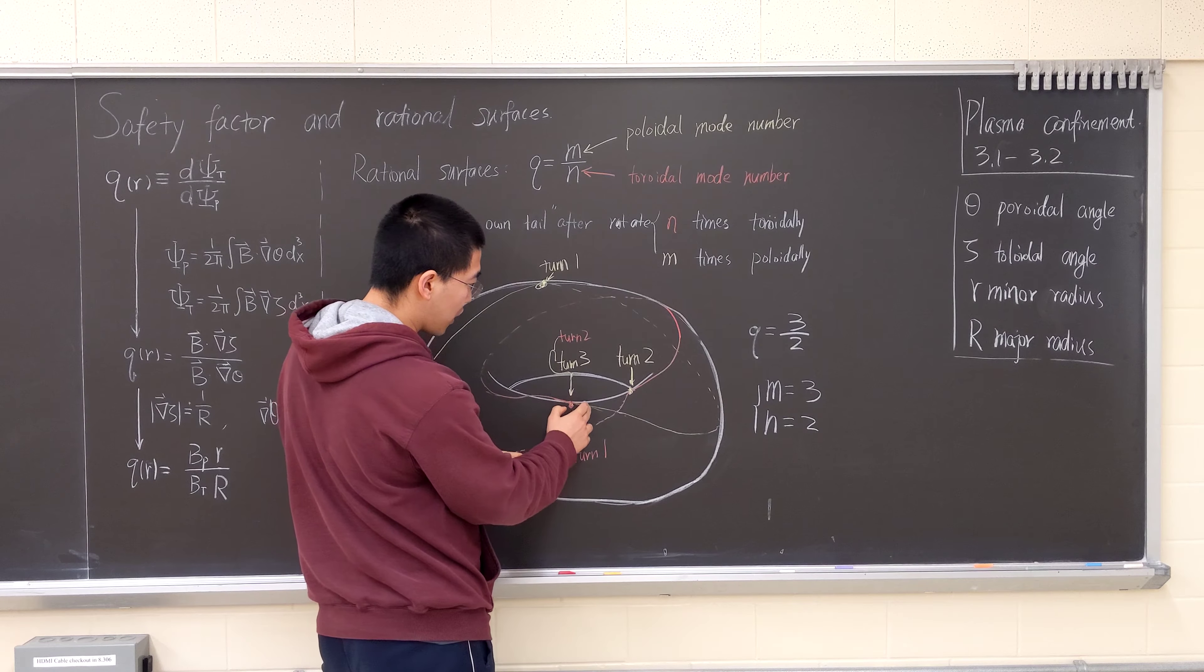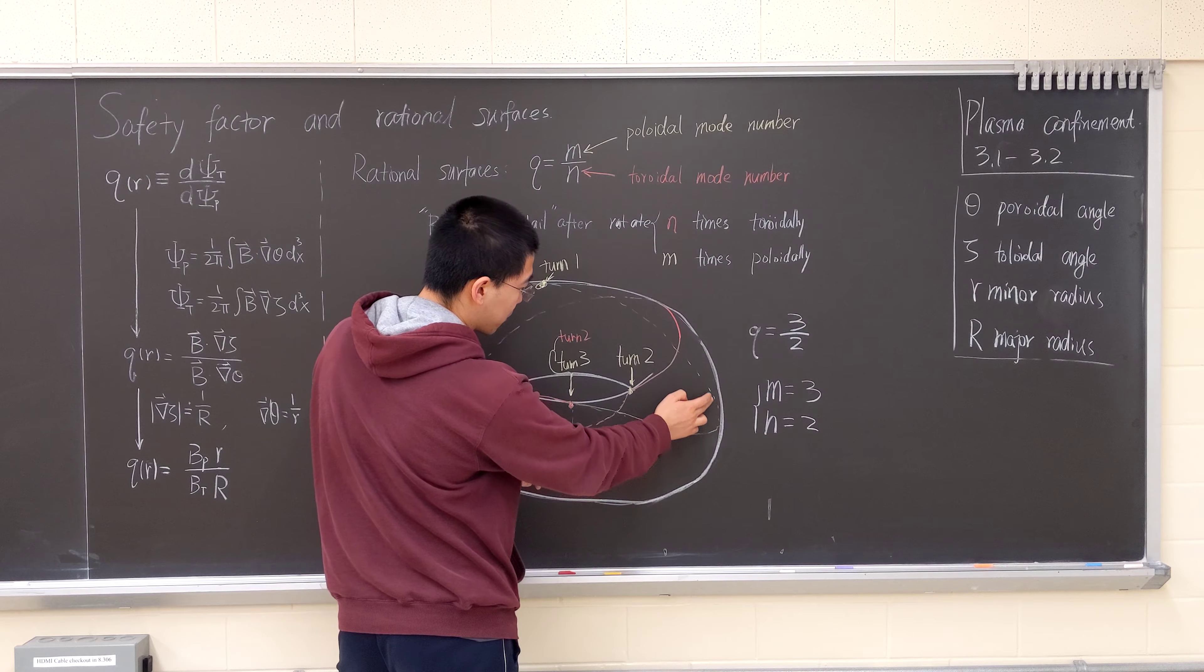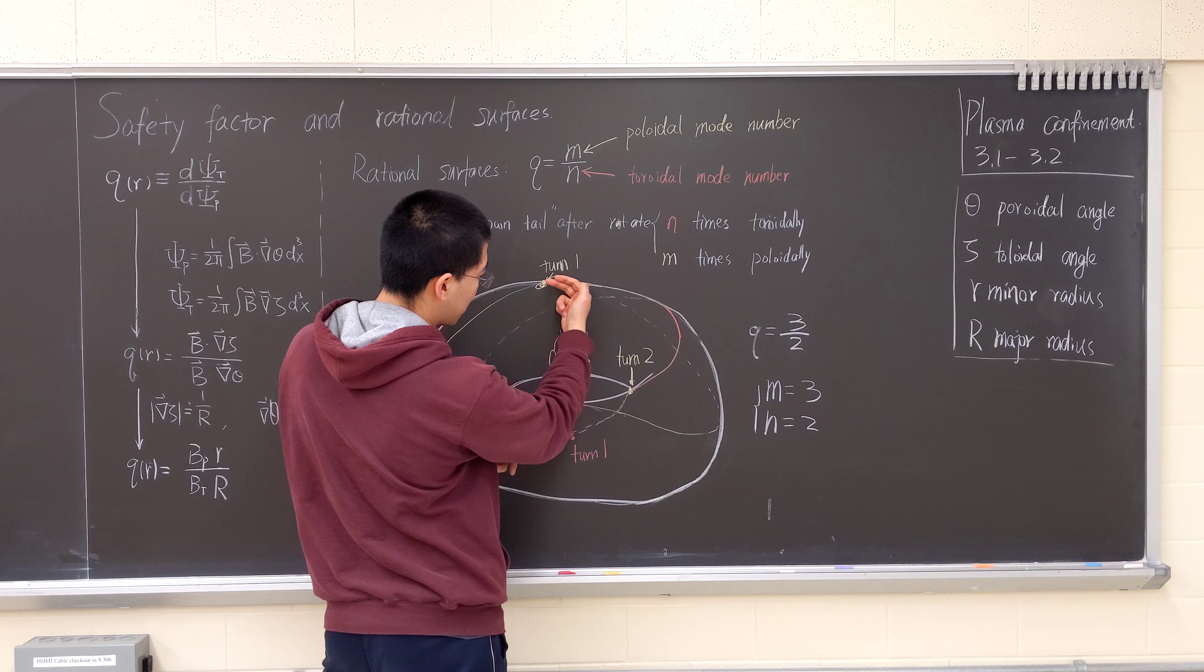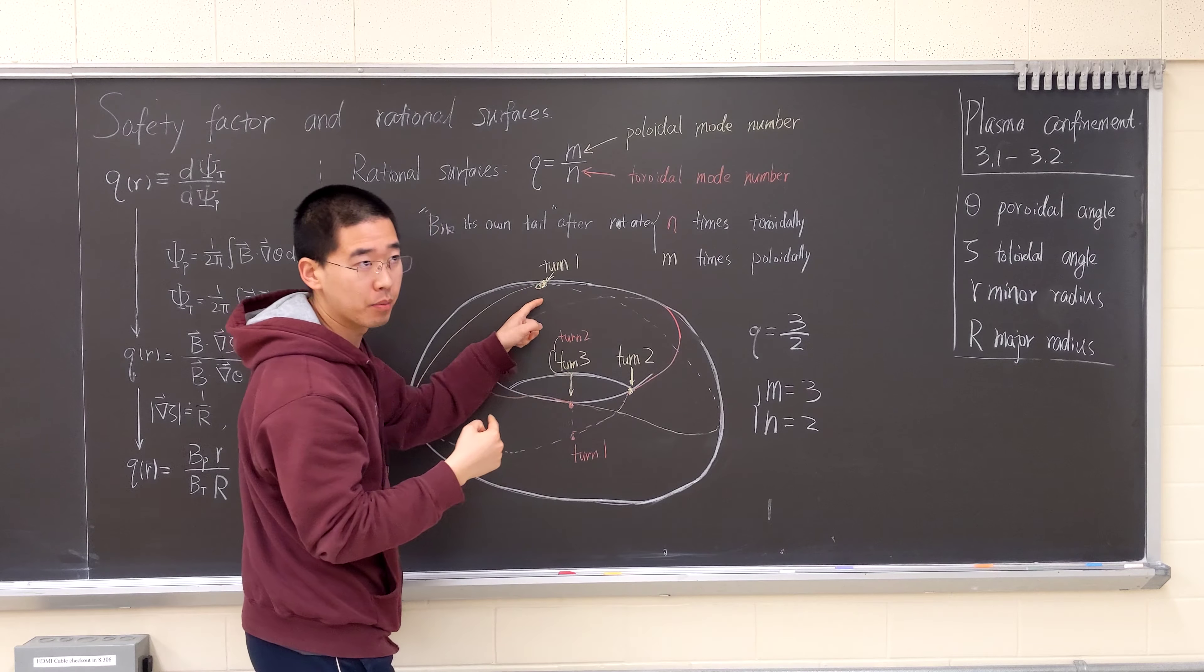The yellow - look at, trace the yellow line, which is the magnetic field line. It goes to the surface, go here. So that's rotating toroidally one time, the first time.